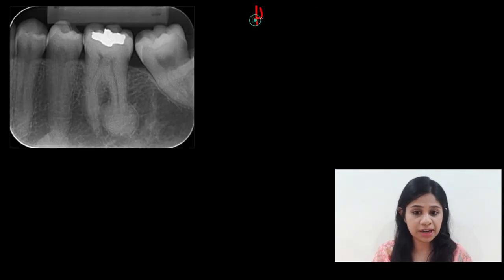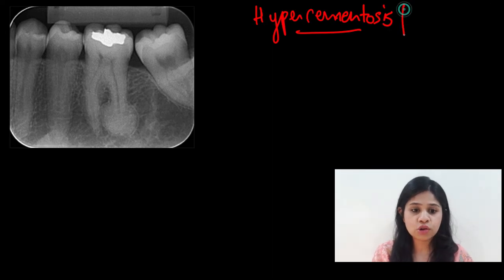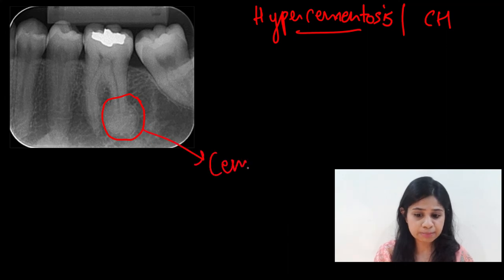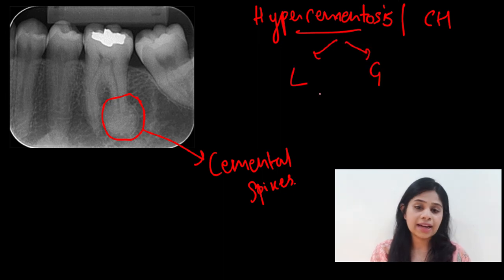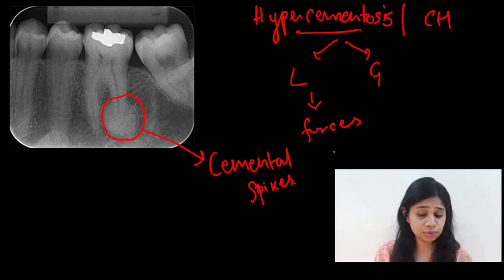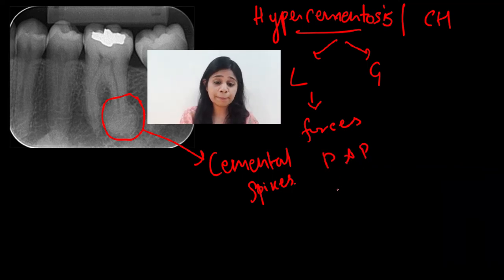The first clinical feature of cementum is hypercementosis, also called cemental hyperplasia — a prominent thickening of cementum. It can appear as a nodular enlargement or as spike-like projections called cemental spikes. Hypercementosis can be localized or generalized. The etiology is somewhat unknown but is believed to be caused by excessive orthodontic forces applied to the tooth, or by chronic pulpal or periodontal infections.